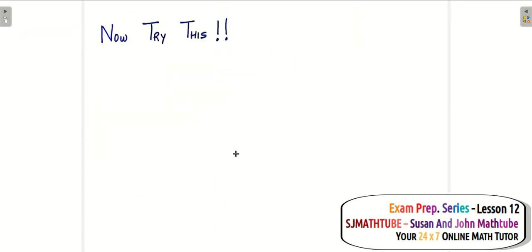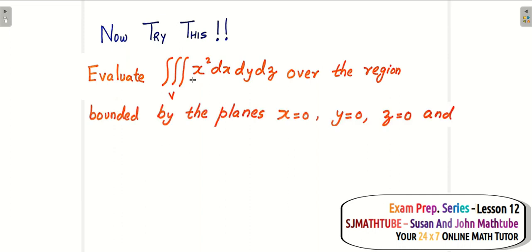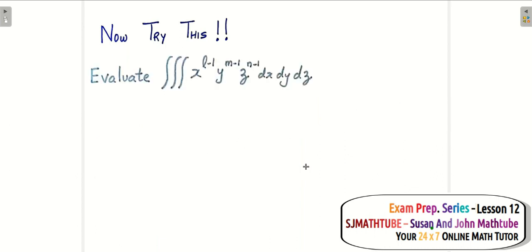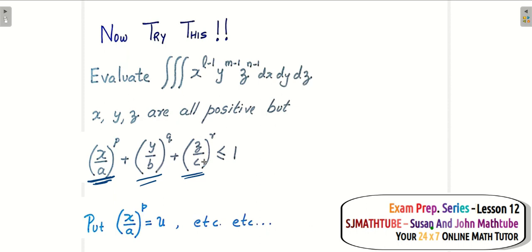Now try a few more questions yourself. First: evaluate the triple integral of X² DX DY DZ over the region bounded by the planes X = 0, Y = 0, Z = 0 (first octant) and X + Y + Z = a, where a is positive. The first step is to put it in the form where the sum equals 1 — call X/a = U, Y/a = V, Z/a = W, giving U + V + W ≤ 1. Try a second practice question using the same logic. If you like the video, please like, share, and subscribe. Bye for now!